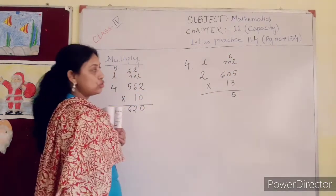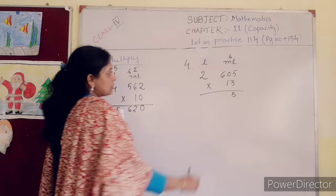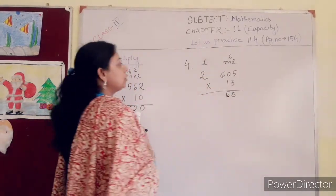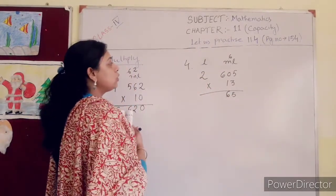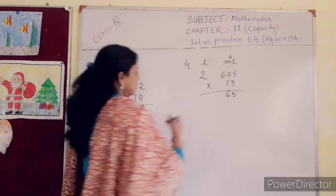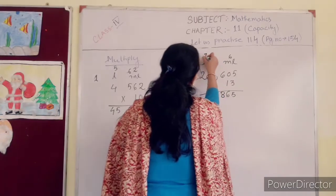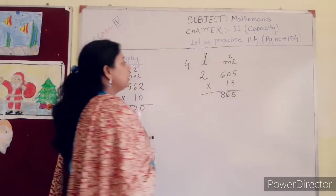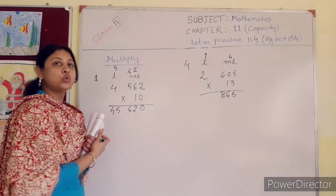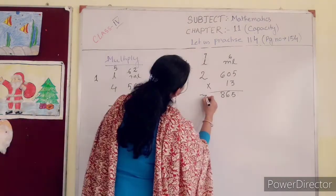13 into 0 is 0. 0 plus 6 is 6. Now, 13 into 6 is 78. 7 is in your hand. 13 into 2 is 26. 26 plus 7 is 33.